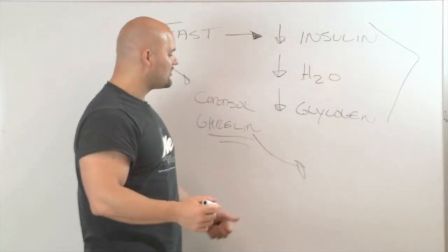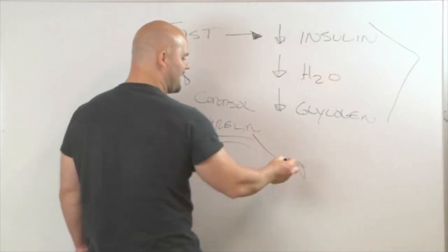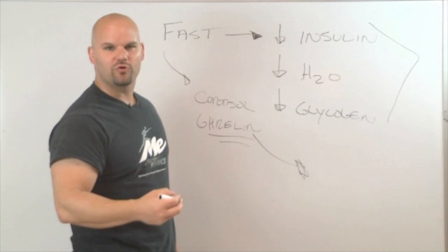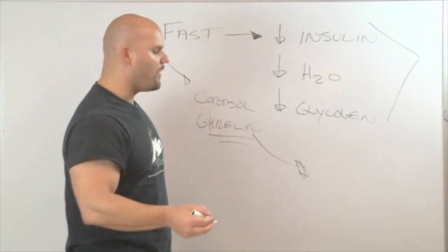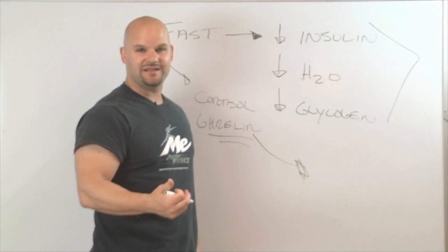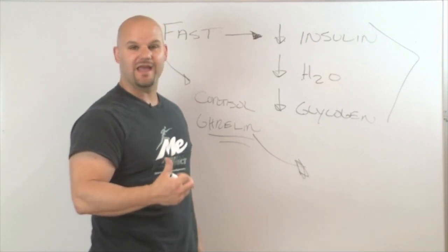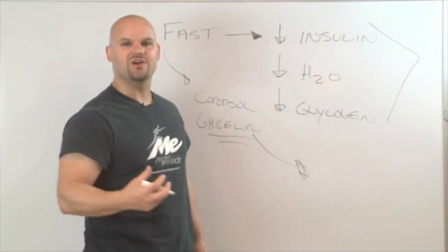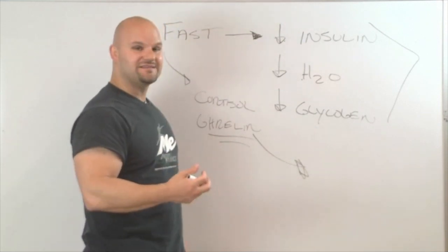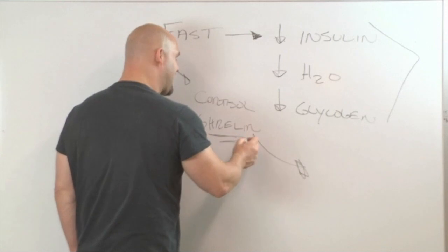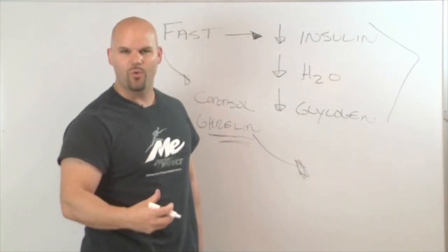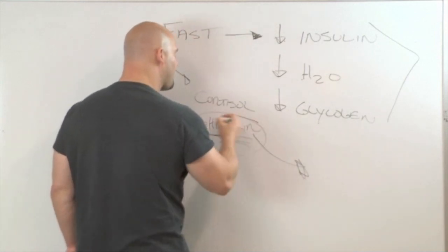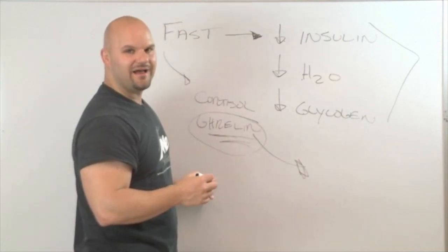Ghrelin turns on certain genetic things that happen. It actually, if you want to know the technical term, it increases lipoprotein lipase messenger RNA. What does that mean? Lipoprotein lipase is the number one fat storing enzyme in the body. And messenger RNA is the genetic component that actually makes our proteins. So what ghrelin does is it actually makes you more likely to store fat once you end your fast.